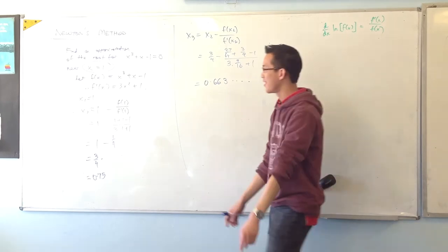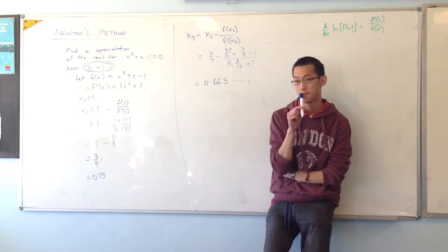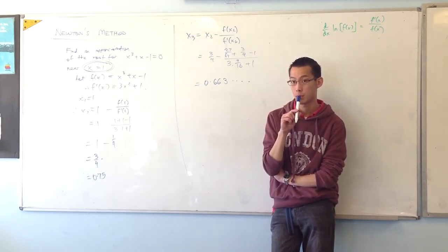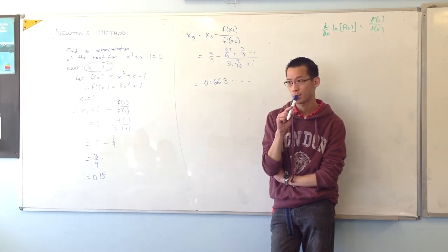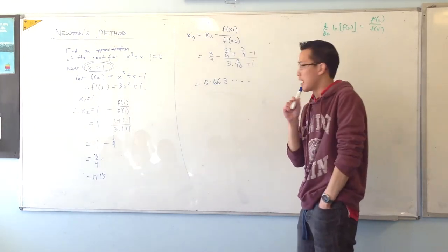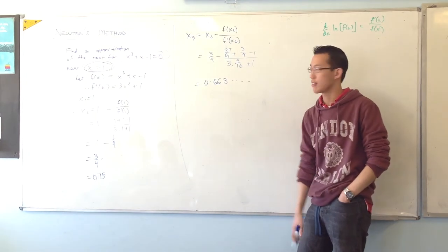Now, has anyone thought, if I didn't provide you with an initial guess, how might you go about it? How might you think, okay, x equals 1, that's a good place to start. Well, forget about all this approximation and that kind of thing, right? You guys can probably graph this without too much difficulty, at least approximately, right?